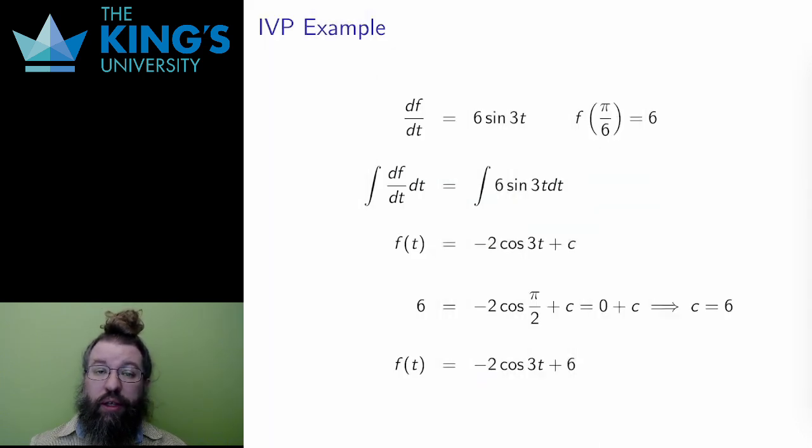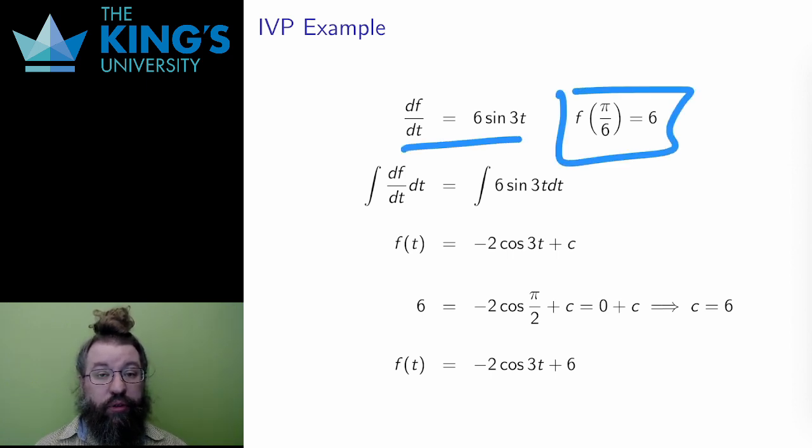Here is another IVP with a DE solvable by direct integration and an initial value. I do the integration first. I integrate both sides, leaving f on the left and negative 2 cos 3t plus c on the right.